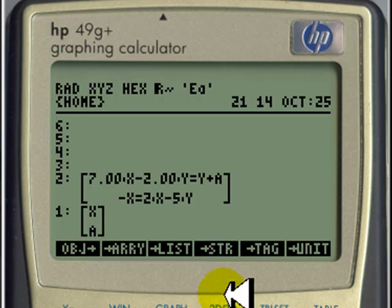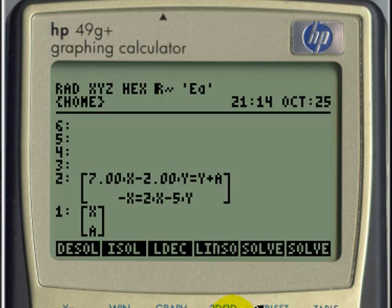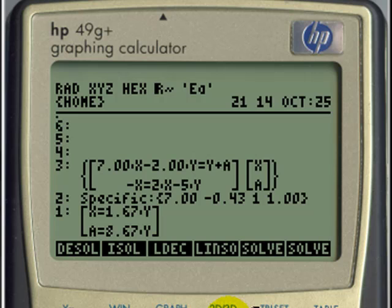And now I'm going to ask the calculator to solve that system of two equations but three symbols in it, x, y and a. Solve that for x and a. Of course, we will get answers in terms of the third unknown, in terms of y. But that is exactly what I want to show you. We go to the system solver and a linear solution is what we want. There you have it. X is 1.67y and a is 8.67y. Both answers are given in terms of the third unknown in our system of equations.